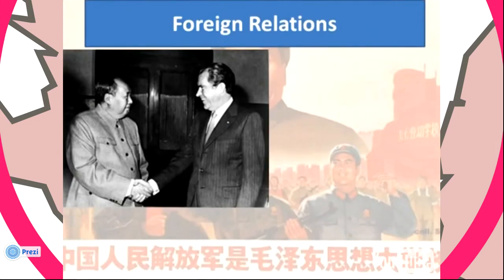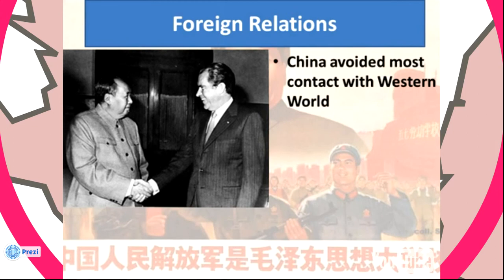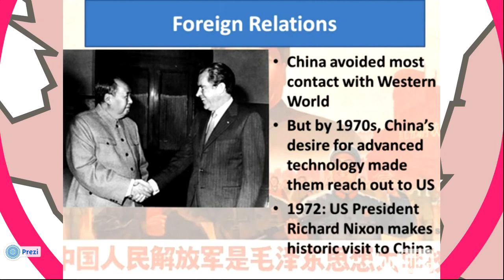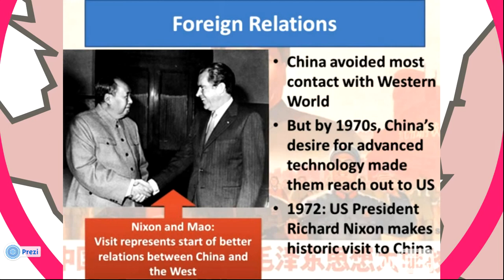In terms of foreign relations, as China was undergoing the Cultural Revolution, they mostly avoided contact with the Western world, including the U.S. But by the 1970s, China's desire for advanced technology made them reach out to the U.S. In 1972, President Richard Nixon made a historic visit to China, representing the start of better relations between China and the Western world.